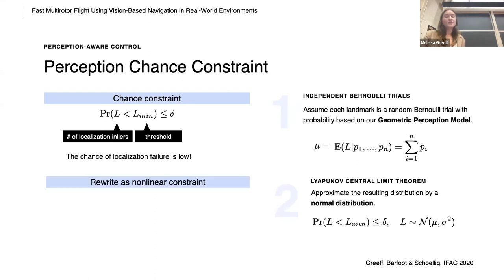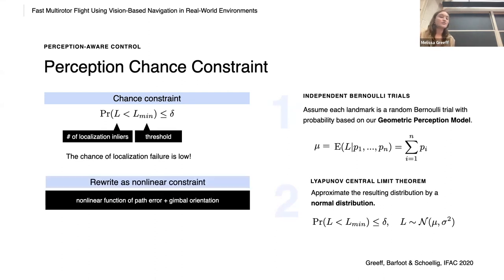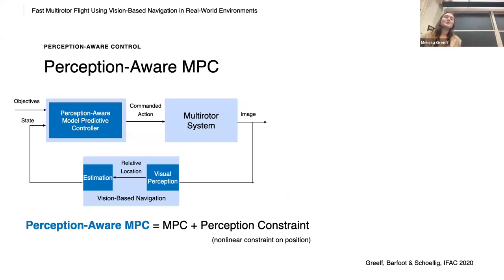And what this allows us to do is to rewrite this chance constraint as a nonlinear function of the path error and gimbal orientation. And the gimbal orientation is matching that during teach. And so the dominant term is the path error.